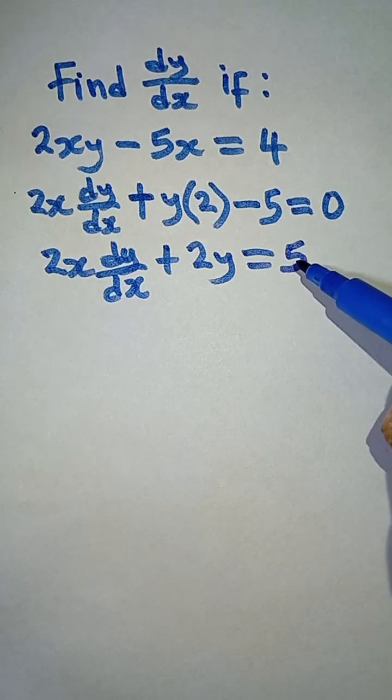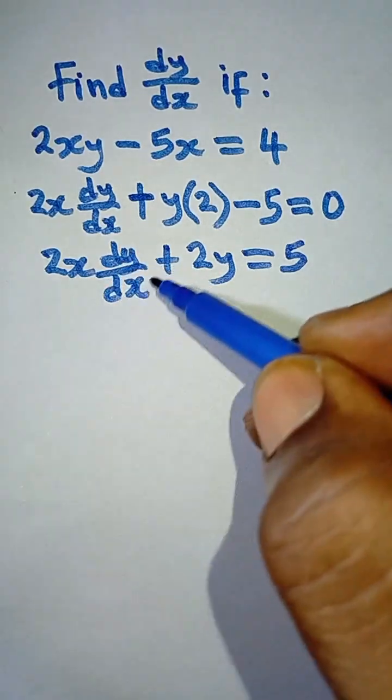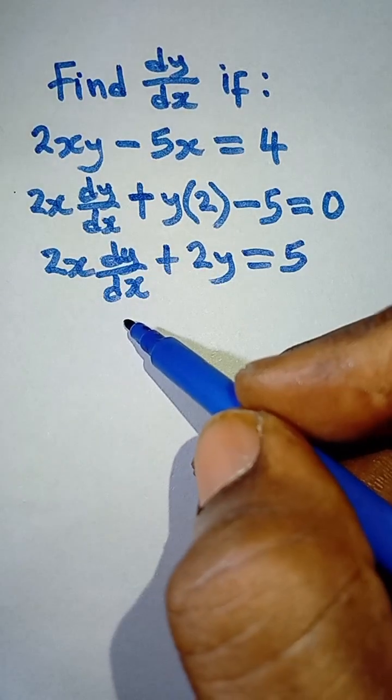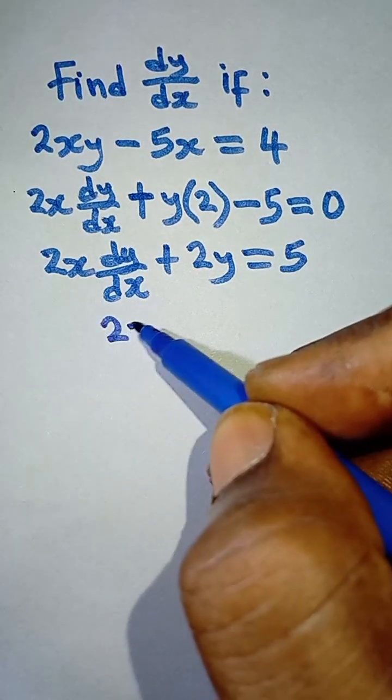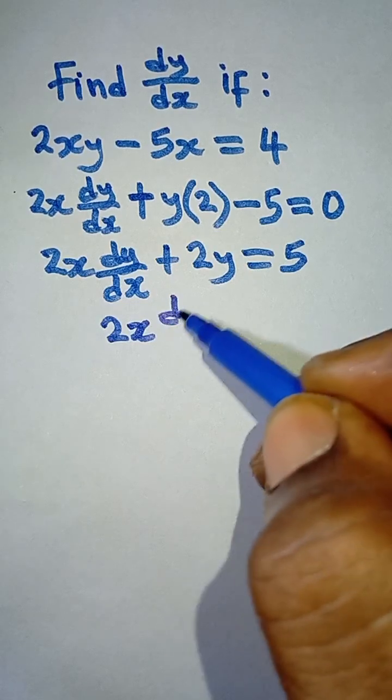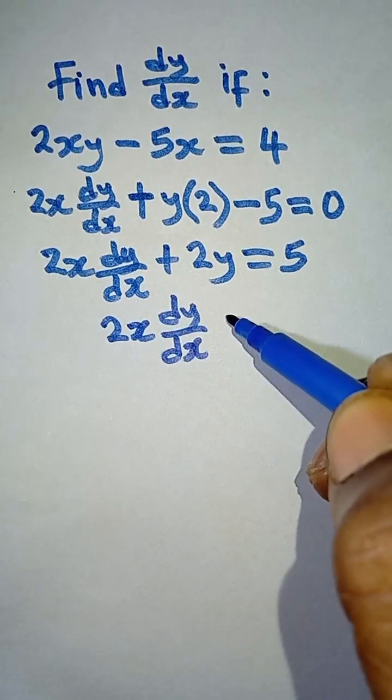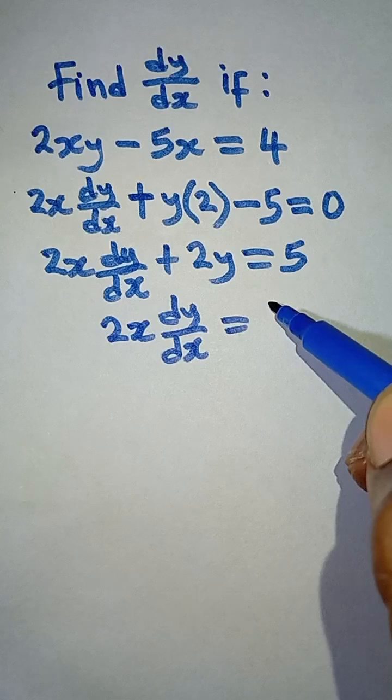So now we can collect terms in dy/dx. So I have 2x dy/dx is equal to 5.